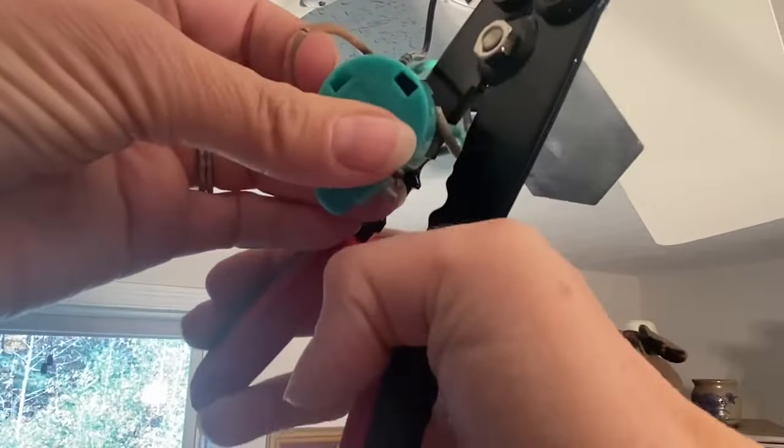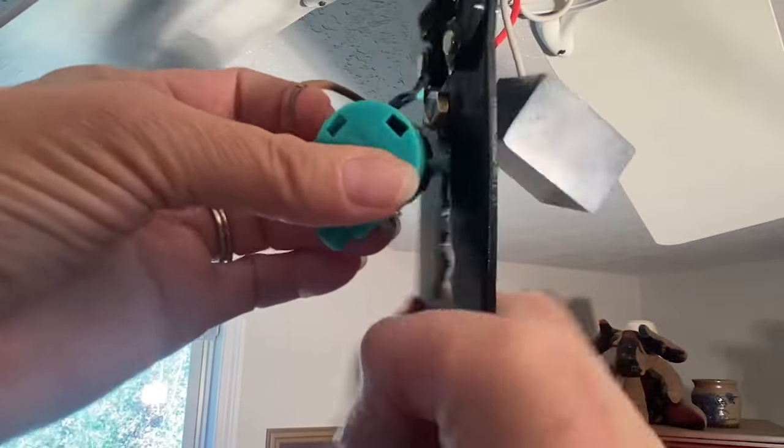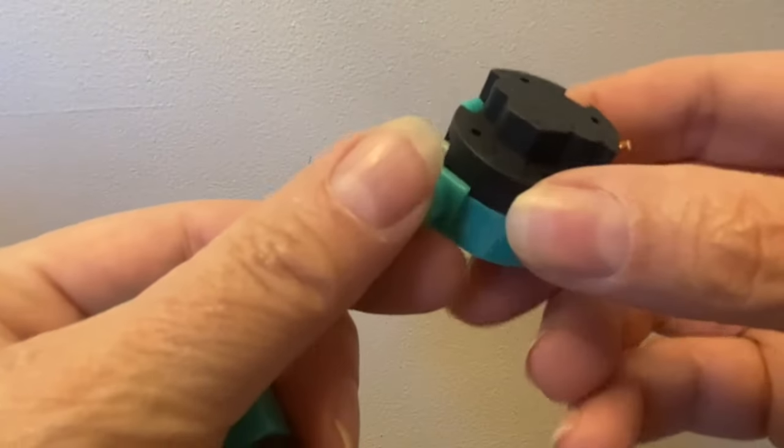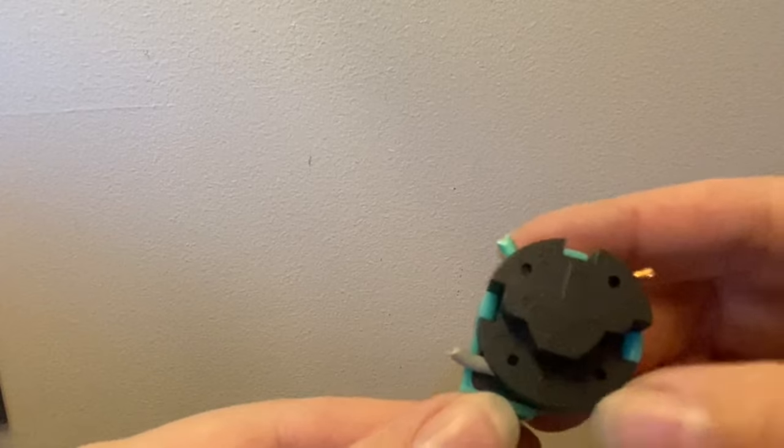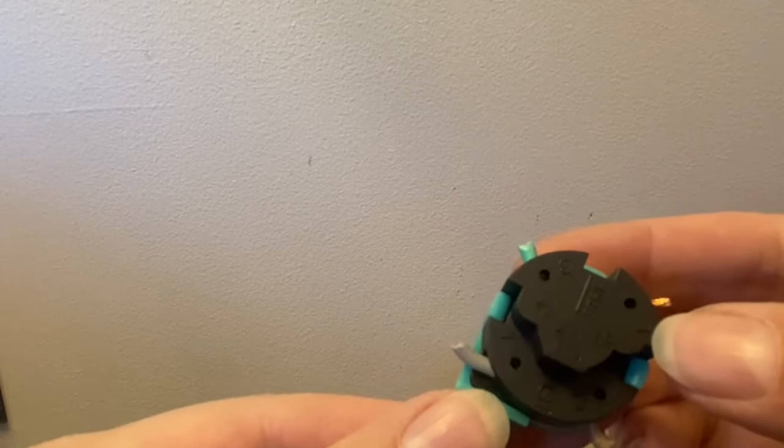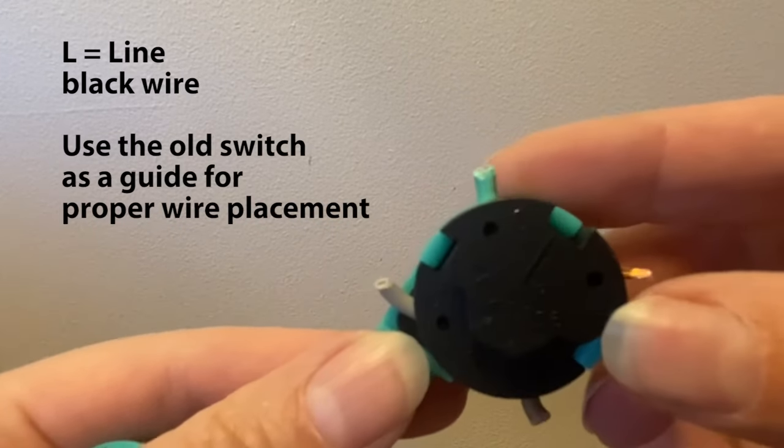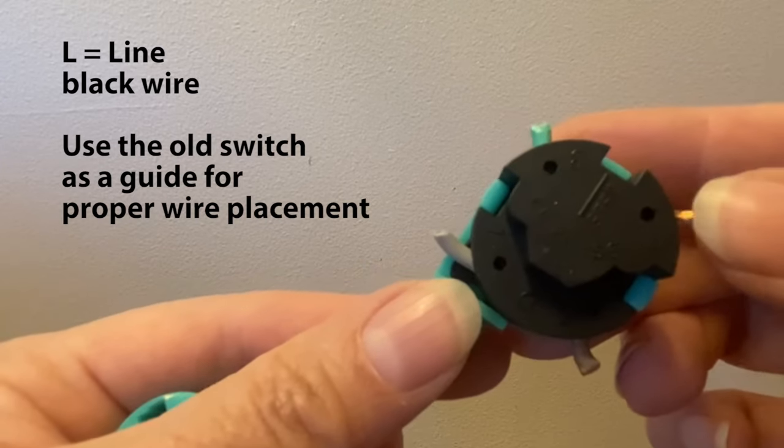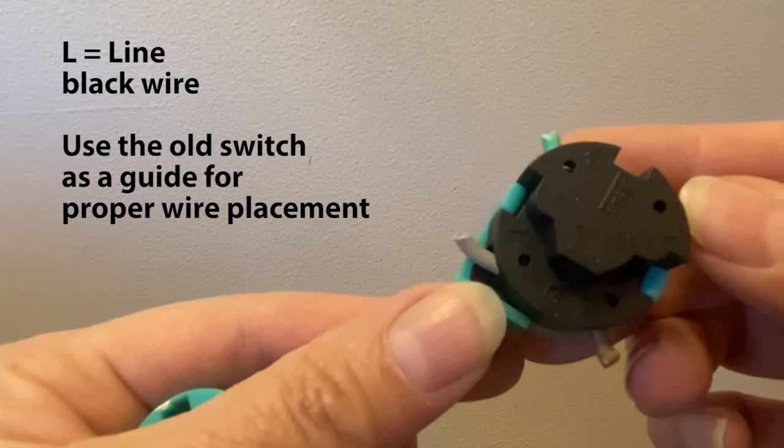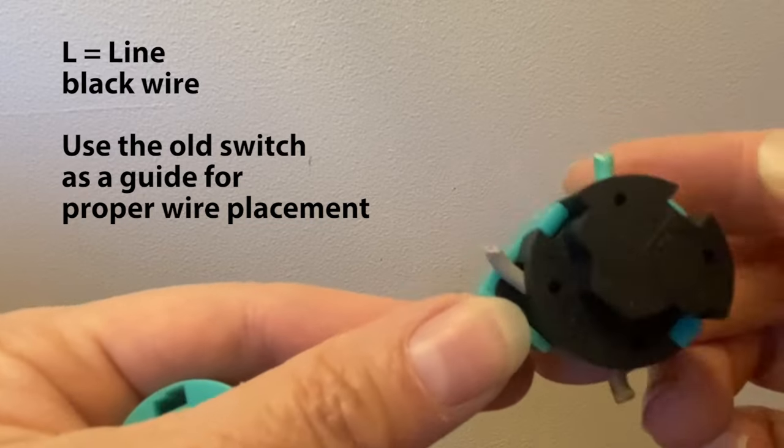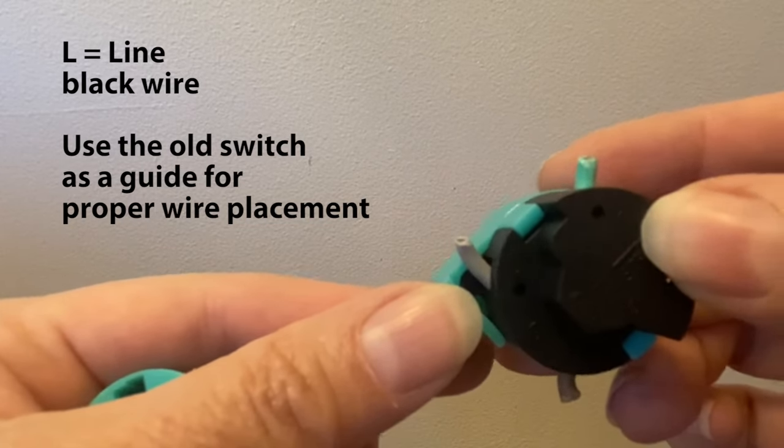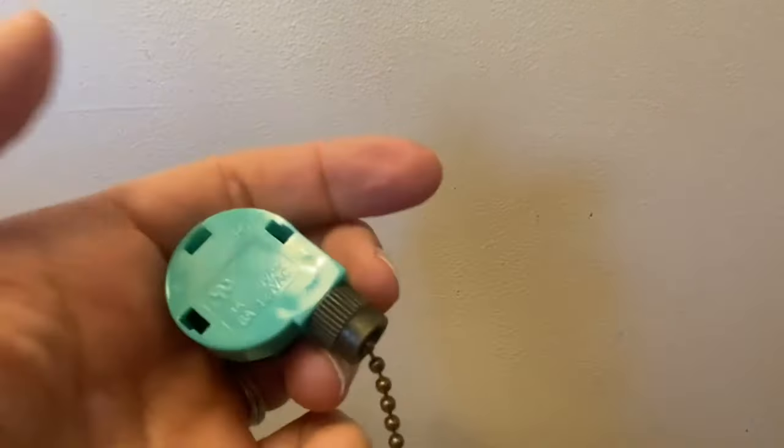And then we will take a good look at the unit. So here's the old unit. You'll notice there's an L, that's for line in, so that's where your hot wire goes in that hole. And then you just line up the other colored cords to the corresponding numbers on the back of the unit and slip them in.